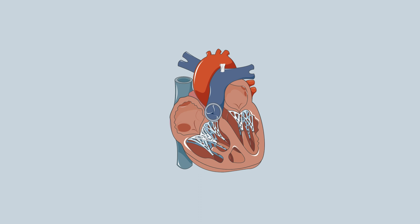An anterior look will reveal the heart has four chambers: the right atrium, right ventricle, left atrium, and left ventricle. The atria and ventricles are separated by valves — the tricuspid valve on the right, and the mitral valve, a bicuspid valve, on the left.